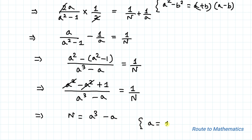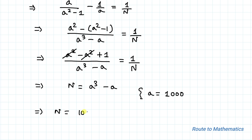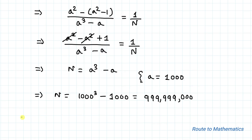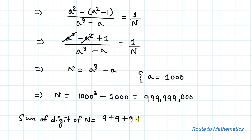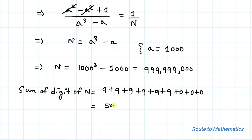Since a = 1000, we get n = 1000³ − 1000 = 999,999,000. We are asked to find the sum of digits of n, which equals 9+9+9+9+9+9+0+0+0 = 54. So 54 is our answer.